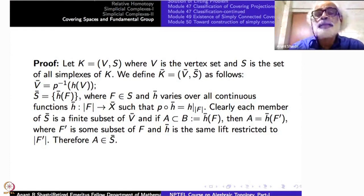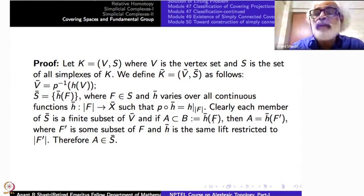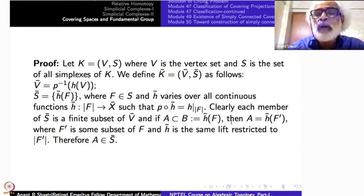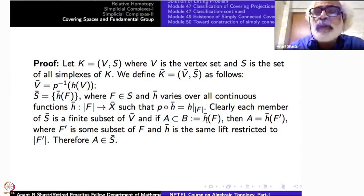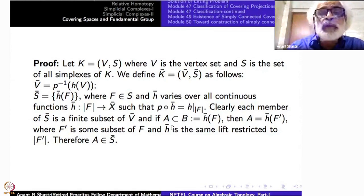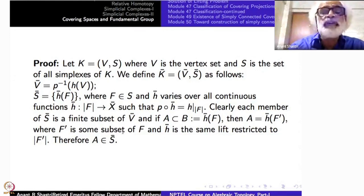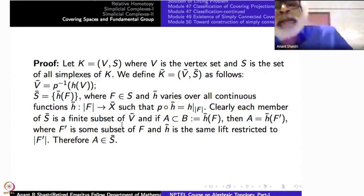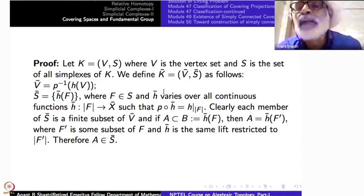Declaring these as simplexes, we have seen that K̄ is a simplicial complex. That is easy to define. But we still need to show why |K̄| is homeomorphic to X̄ in such a way that composing with P gives a simplicial map from K̄ to K — that is the harder part.